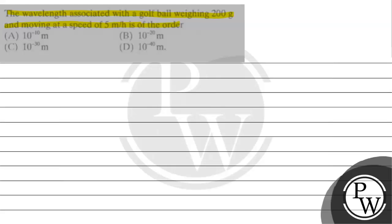Option A: 10 raised to the power minus 10 meters. Option B: 10 raised to the power minus 20 meters. Option C: 10 raised to the power minus 30 meters. Option D: 10 raised to the power minus 40 meters.